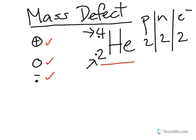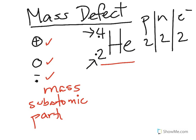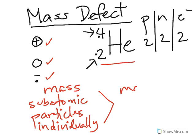And that's known as the mass defect. The mass of all the subatomic particles individually is actually greater than the mass of the atom itself.